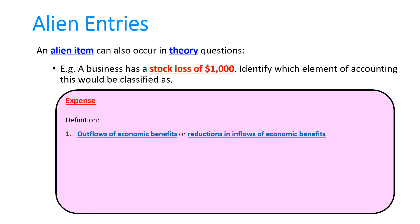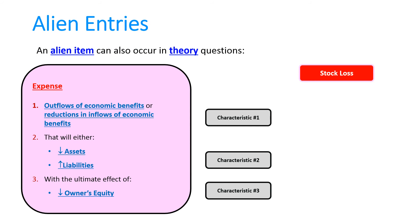Let's look at the definition. The definition of an expense is it's either an outflow of economic benefits or a reduction in inflows. The second characteristic is it's either going to decrease assets or increase liabilities. And the third characteristic is it's got to ultimately decrease owner's equity. Now what I'm going to do is relate that definition to a stock loss. The first characteristic is either an outflow of economic benefits or a reduction in inflows. So I only put the bit that's appropriate: there is an outflow of economic benefits, and that is the stock that's been lost. If I wrote reduction in inflows, that's a rote learned answer that has nothing to do with a stock loss, so I'd actually lose marks for that.